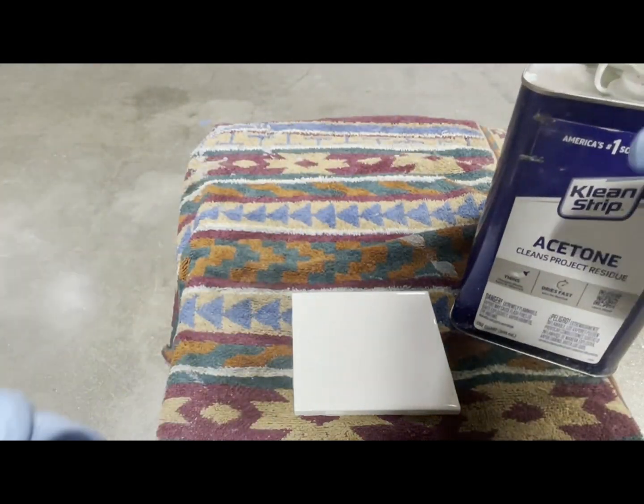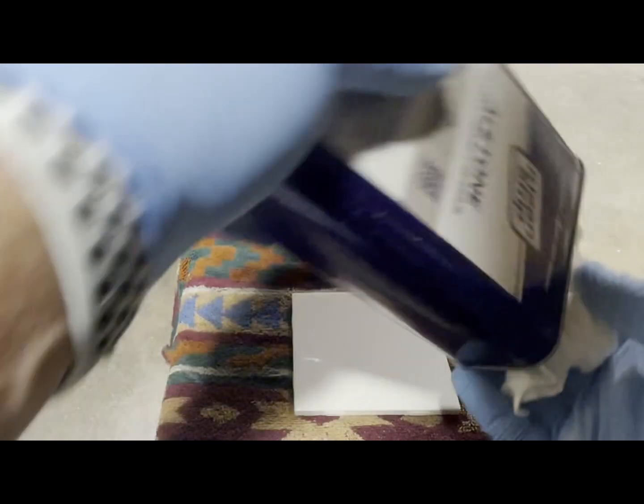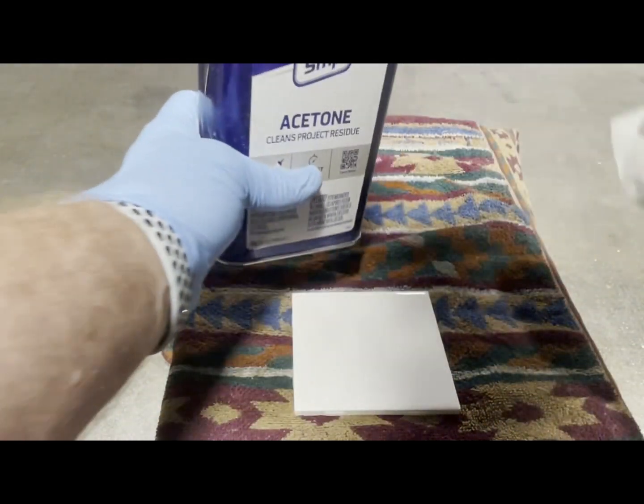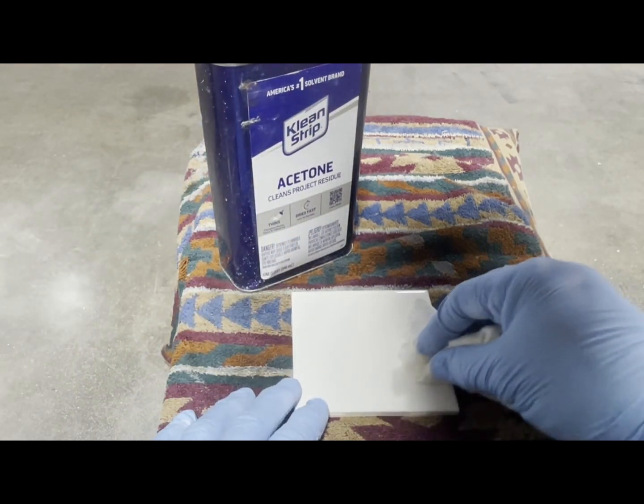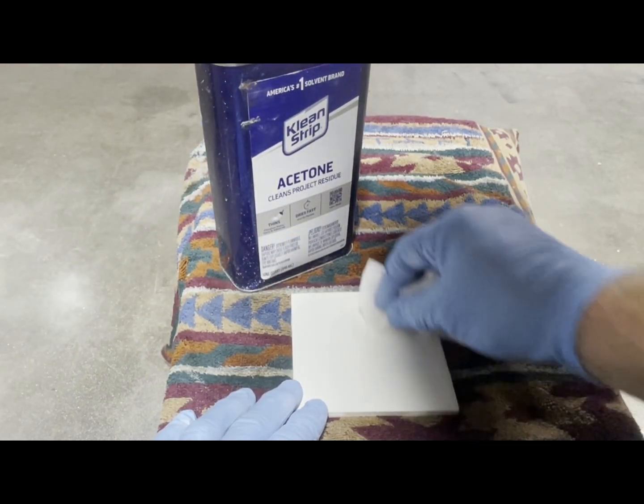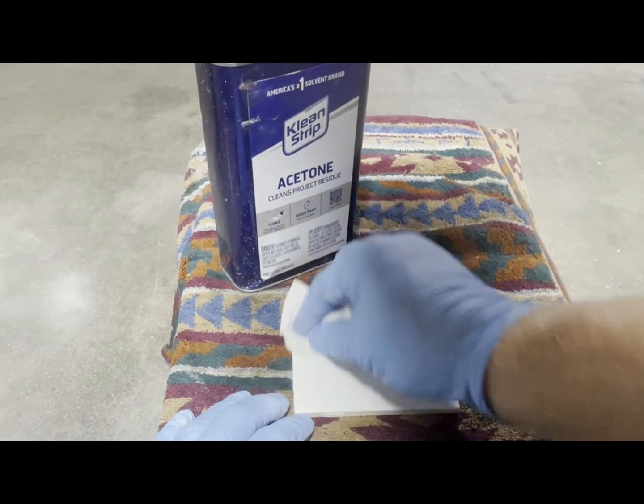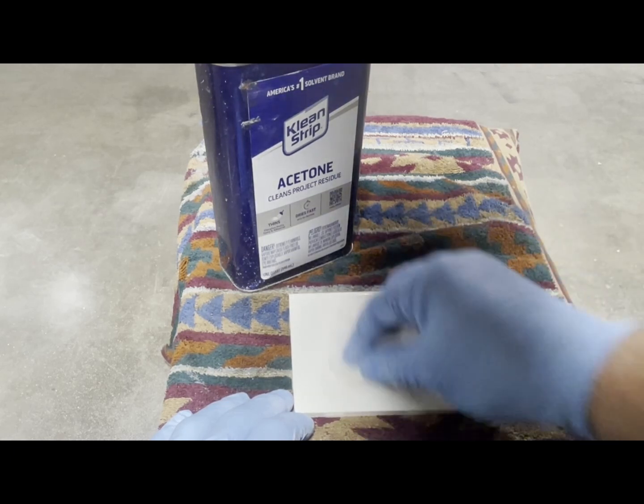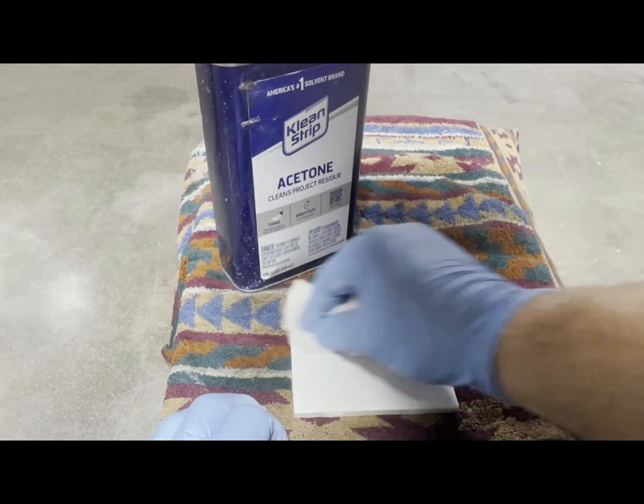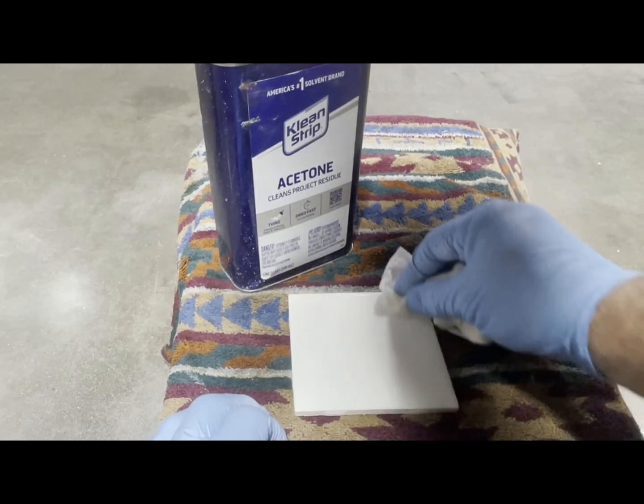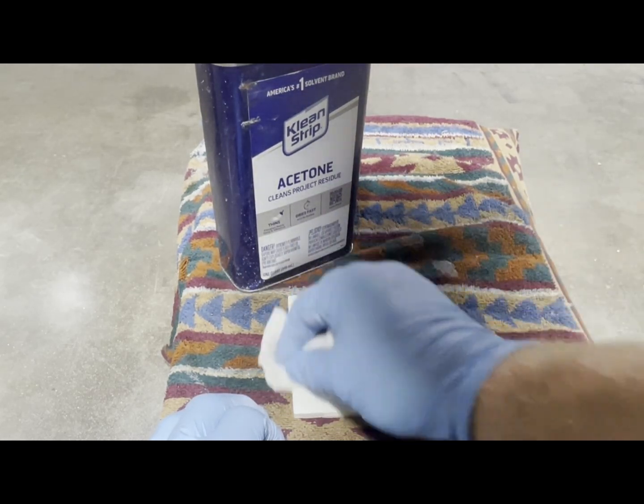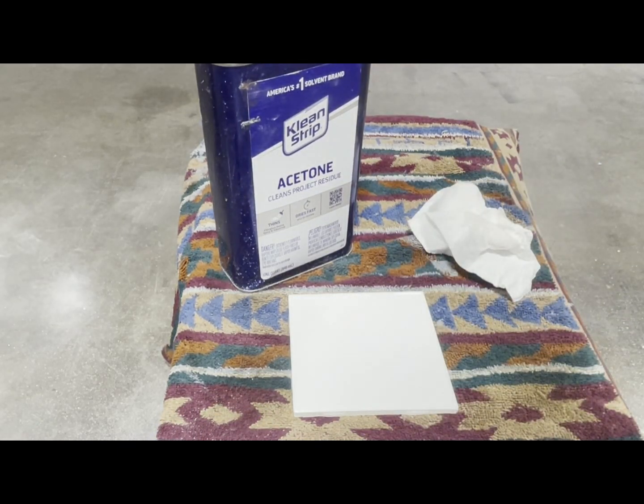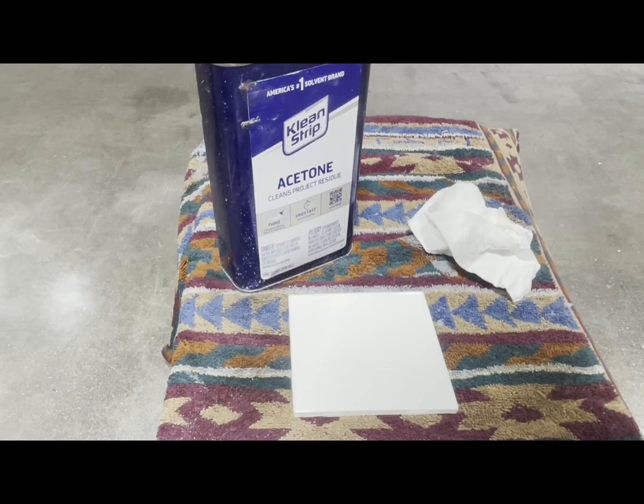I'll just take my acetone and pour it onto a paper towel, then I'll just go back and forth, up and down, left and right. I'll just get the edges and go in a square motion. So that's the procedure for cleaning the tile.